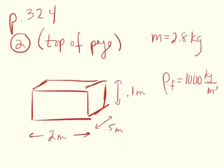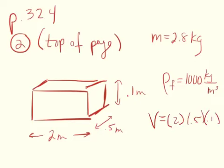We want to know what additional mass this mattress can hold and still float. First, let's see if the mattress alone will float by finding its density. Volume for any rectangular solid is length times width times height. So we've got 2 times one-half times one-tenth. A half of 2 is 1, times a tenth is a tenth — so the volume is 0.1 cubic meters. Then you divide 2.8 by that.